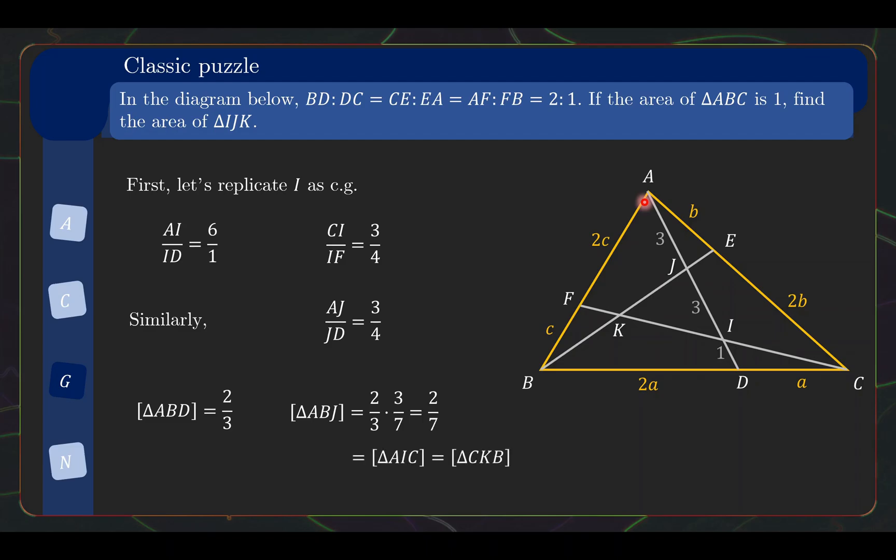And CKB is also going to be 2 over 7. So by taking away the three parts of 2 over 7, what we are left is that triangle IJK equals to 1 over 7. So that's all to this problem.